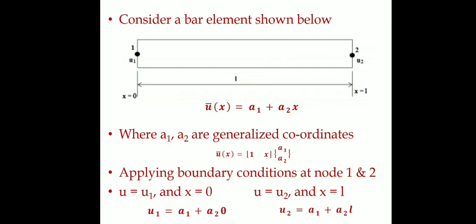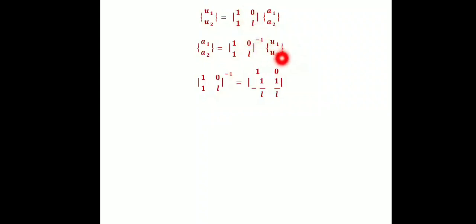From the matrix formula [u1, u2]ᵀ = [1, 0; 1, L] · [a1, a2]ᵀ, we solve for [a1, a2]ᵀ using the matrix inverse — the adjoint matrix divided by the determinant of A. This inverse is then applied to get the values of a1 and a2.